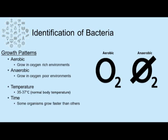One distinguishing factor of bacteria are growth patterns. When a bacterium grows in the presence of an oxygen-rich environment, it is said to be aerobic, and when the organism is capable of growing in an oxygen-poor environment, it is anaerobic. Most bacteria that are pathogenic to humans grow between 35 and 37 degrees Celsius, which is normal body temperature. Another distinguishing factor is the amount of time it takes for certain organisms to grow, as some organisms grow much more quickly than others.